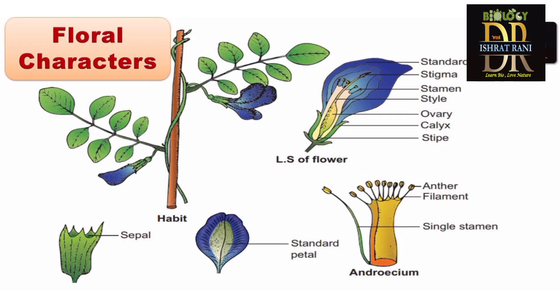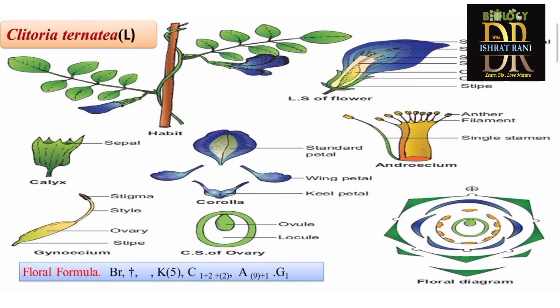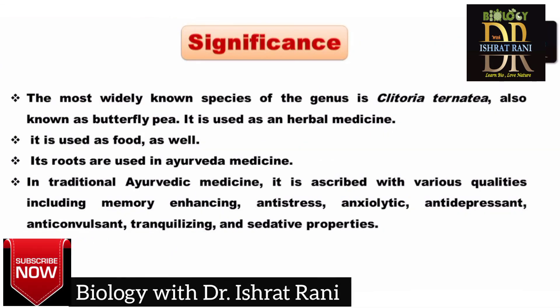As a review of floral characters: the sepals, petals, androecium, and gynoecium are all present. Along with the floral formula and floral diagram, this is for your practice to learn all the parts briefly. Now we will discuss the significance of Clitoria ternatea — it is a widely known species used as herbal medicine and as a food material.